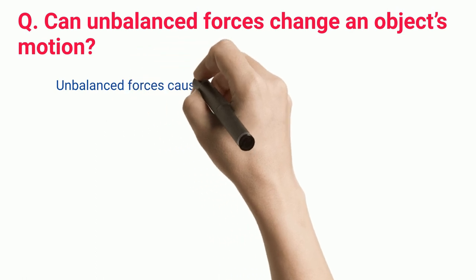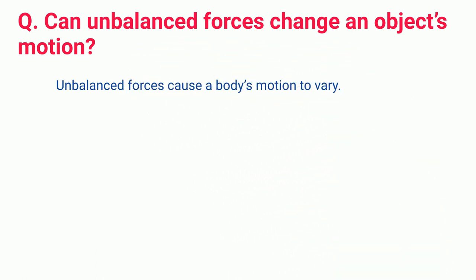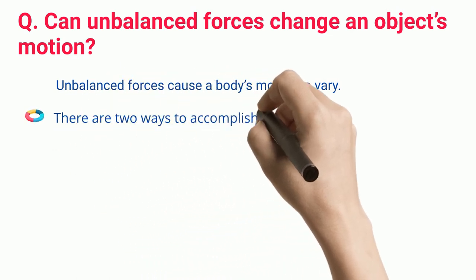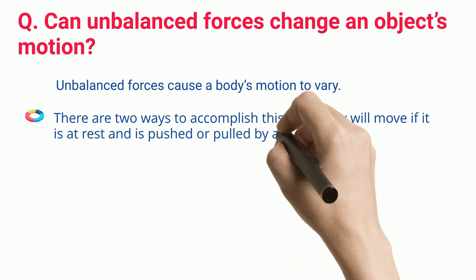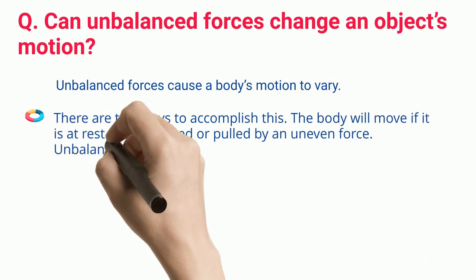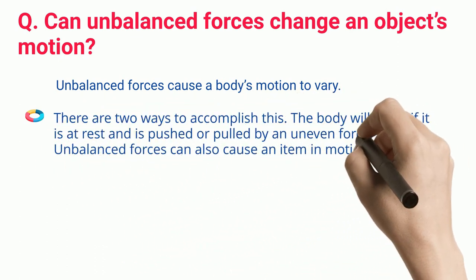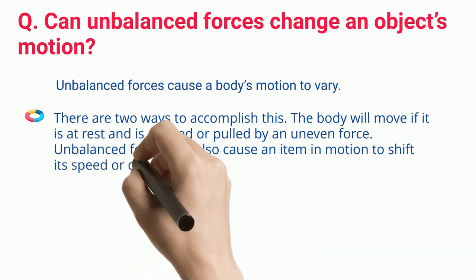Unbalanced forces cause a body's motion to vary. There are two ways to accomplish this. The body will move if it is at rest and is pushed or pulled by an uneven force. Unbalanced forces can also cause an item in motion to shift its speed or direction.